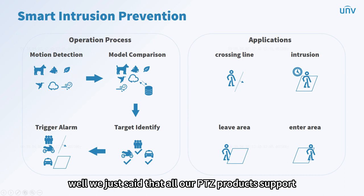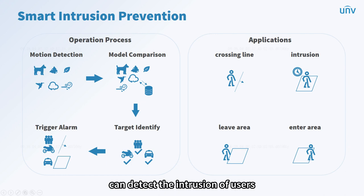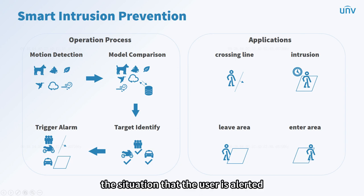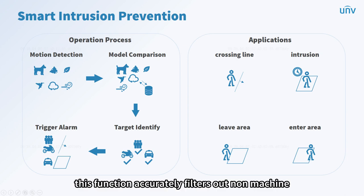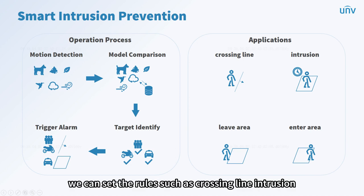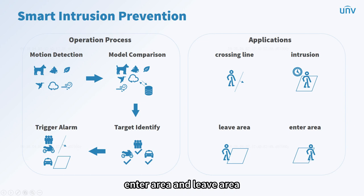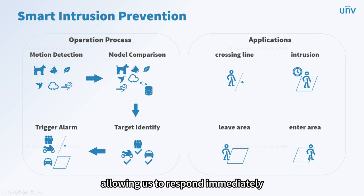All our PTZ products support smart intrusion prevention — but what does it mean and how does it work? The smart intrusion prevention function can detect intrusion of users' private territories and upload images in a timely manner. It accurately filters out non-machine and non-human targets, and extracts attributes of people, motor vehicles, and non-motorized vehicles. We can set rules such as crossing line, intrusion, enter area, and leave area. An alarm will be triggered when people, motor vehicles, or non-motor vehicles trigger the rules, allowing us to respond immediately.